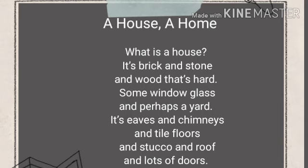Now I will read out both stanzas of the poem and explain accordingly. First stanza: 'What is a house? It's brick and a stone and wood that's hard, some window glass and perhaps a yard. It's eaves and chimneys and tile floors and stucco and roof and lots of doors.' So what do you call a house? It's a structure made of bricks, stone, and wood.